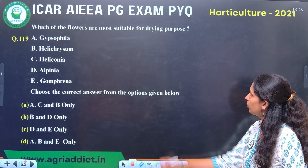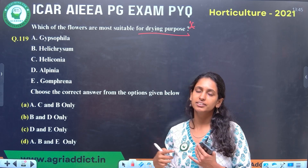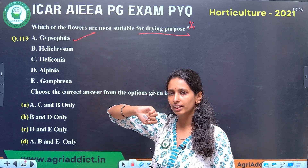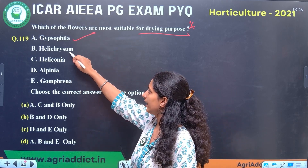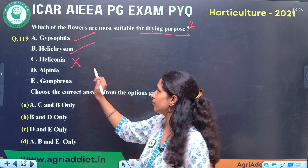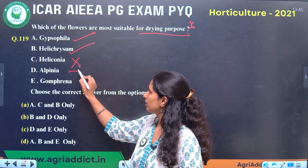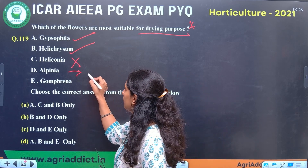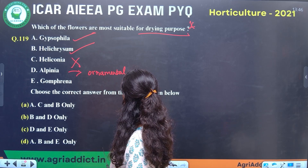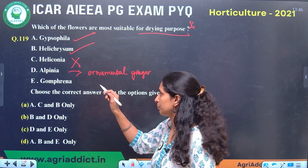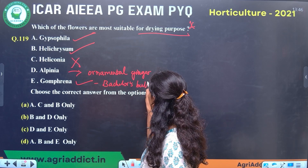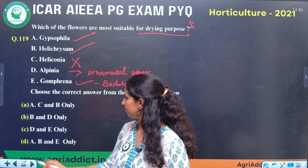Next question: which flowers are most suitable for drying? Gypsophila is well suited for drying and is a very good filler plant. Helichrysum is also suitable for drying. Heliconia is a specialty flower — a fat flower — which is not suitable for drying. Alpinia, called ornamental ginger, is not suitable for drying. Gomphrena is called bachelor's button and is suitable for drying. So the answer is Gypsophila, Helichrysum, and Gomphrena.